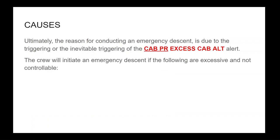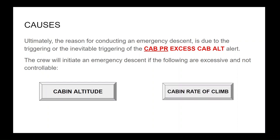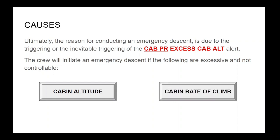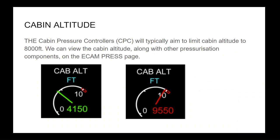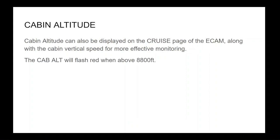Ultimately, the reason for conducting an emergency descent is due to the triggering — or the inevitable triggering — of the cabin pressure excess cabin altitude alert. The crew will initiate an emergency descent if the cabin altitude and cabin rate of climb are excessive and not controllable. The cabin pressure controllers (CPC) typically aim to limit, but not restrict, cabin altitude to 8,000 feet. We can view the cabin altitude, along with other pressurization components, on the ECAM pressure page. Cabin altitude can also be displayed on the cruise page of the ECAM, along with the cabin vertical speed for more effective monitoring.